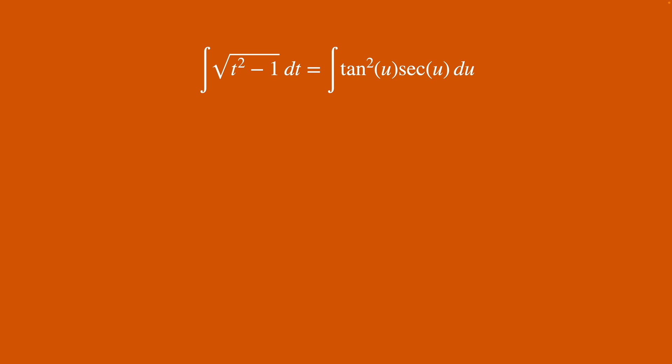And then now we can rewrite our tan squared as sec squared minus one. So distributing that and our integral sign gives us our right hand side.